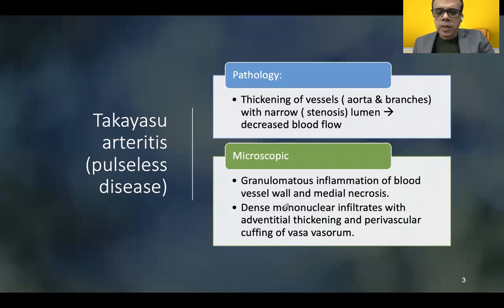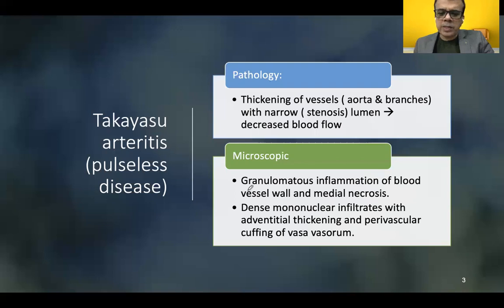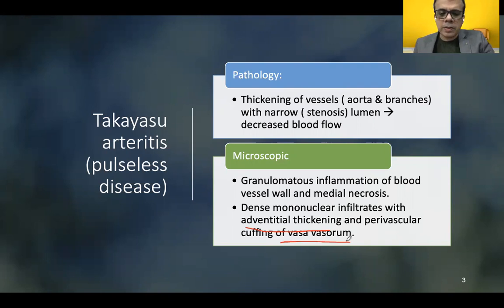Pathologically, Takayasu Arteritis presents as thickening of blood vessels — the aorta and branches — with a narrowed lumen that causes significant decrease in blood flow. Microscopically, we see granulomatous inflammation of blood vessel walls and significant medial necrosis, sometimes in multiple patchy areas. There is also dense mononuclear infiltrate with thickening of the adventitia and of the vasa vasorum, the smaller blood vessels supplying the blood vessel walls, which are also infiltrated with mononuclear infiltrates.